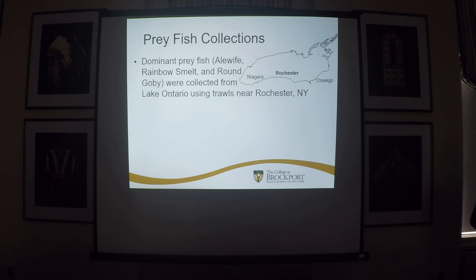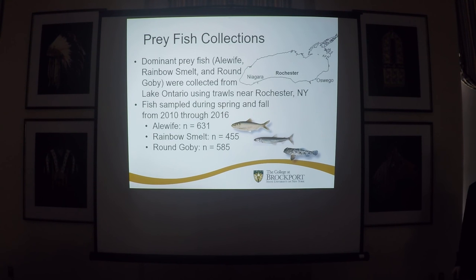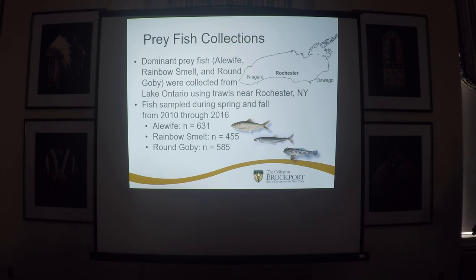For this study, prey fish were collected from Rochester, New York and Lake Ontario. The main prey fish we look at are alewife, rainbow smelt, and round goby. They were collected by New York State DEC and USGS using trawls, and sampled in both the fall and the spring from 2010 through 2016 — a long period. We had a total of about 1,600 fish: about 630 alewife, 450 rainbow smelt, and 580 round goby.